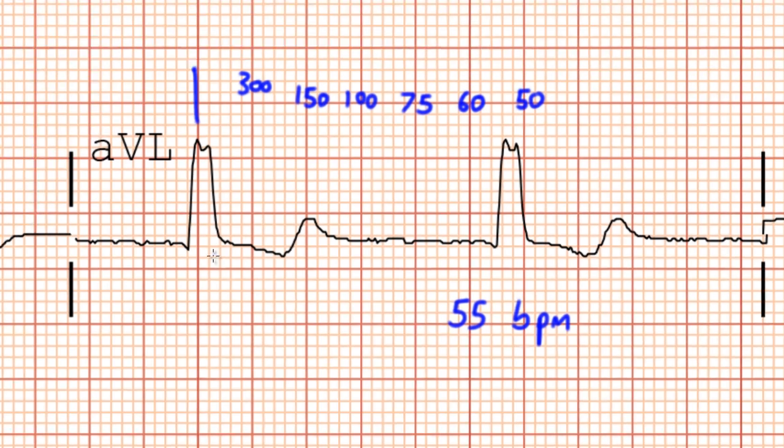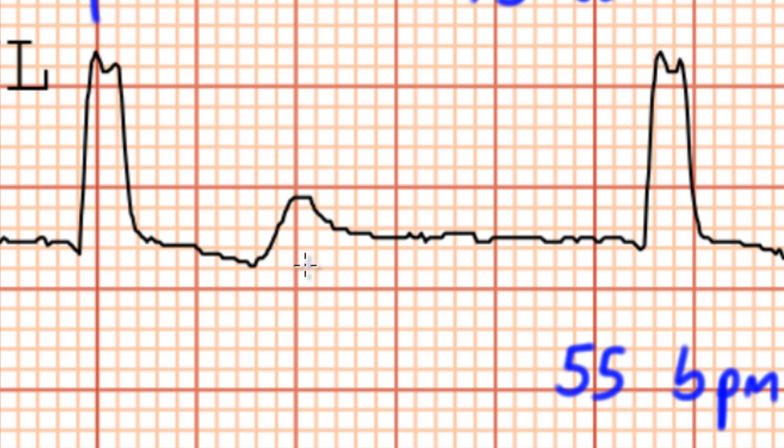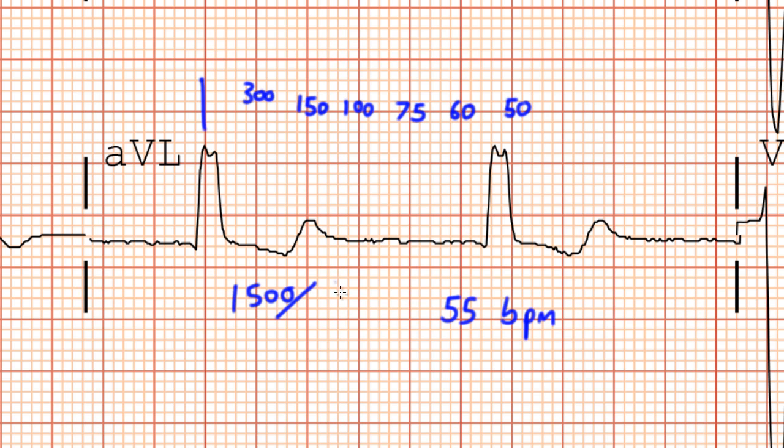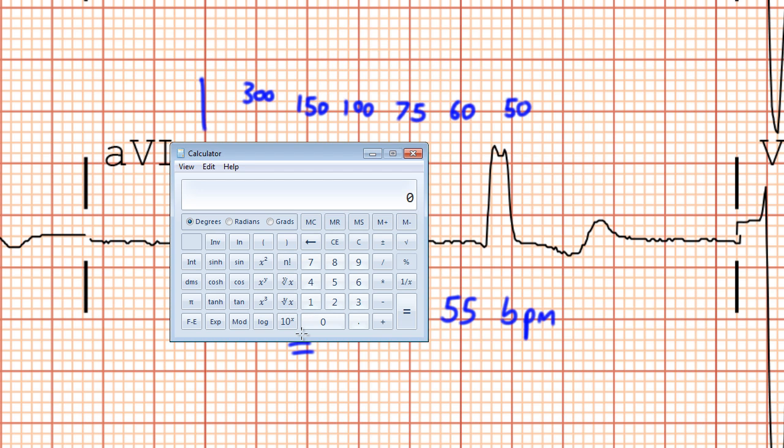Because we're bored, let's just go ahead and try that. 5, 10, 15, 20, 25, 26, 27, 28. We have about 28 small boxes between consecutive QRS complexes. So we can go ahead and take 1500 and divide it by 28, which gives us our heart rate of, does someone have a calculator? Alright, hang on, let me find my calculator. 1500 divided by 28. Okay, so it appears that our heart rate is actually approximately 54 beats per minute. I was close.